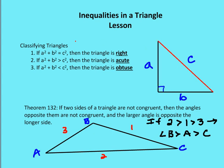The last theorem we're going to talk about is a relationship of sides and angles. If two sides of a triangle are not congruent, then the angles opposite them are not congruent, and the larger angle is opposite the longer side. So if segment AC is greater than segment BC, which is greater than segment AB, then angle B is greater than angle A, which is greater than angle C. Longer side means larger opposite angle; smaller side means smallest angle.